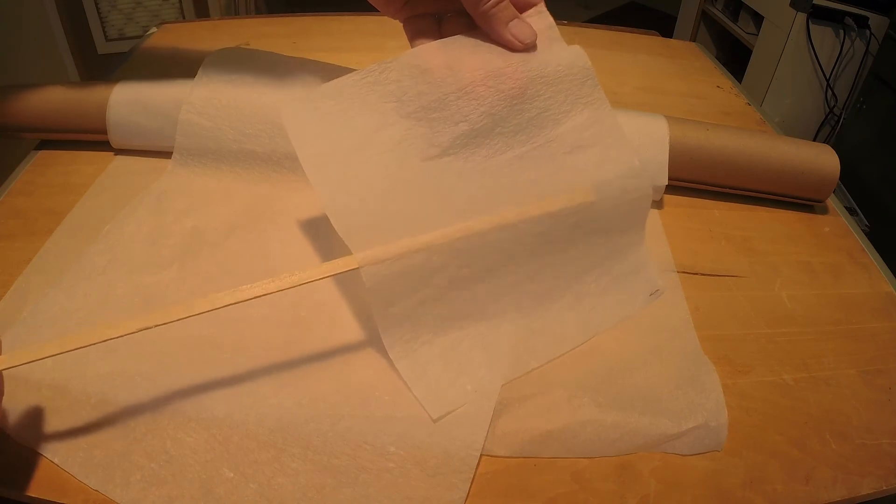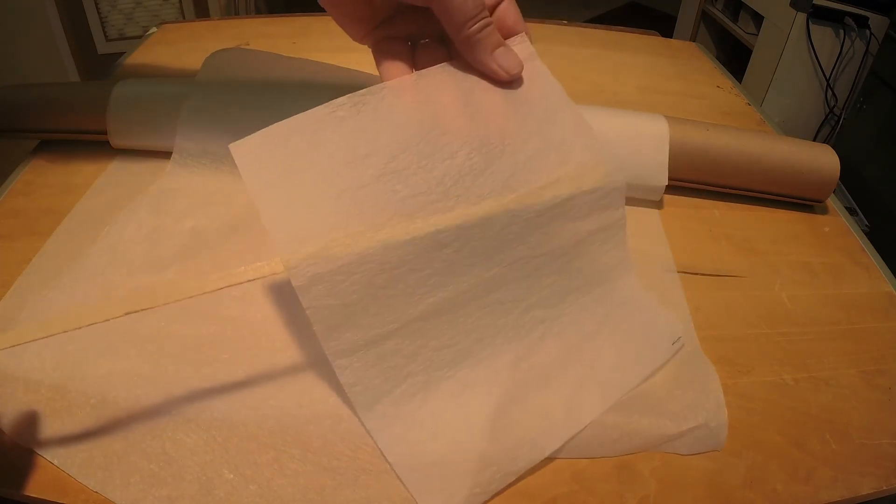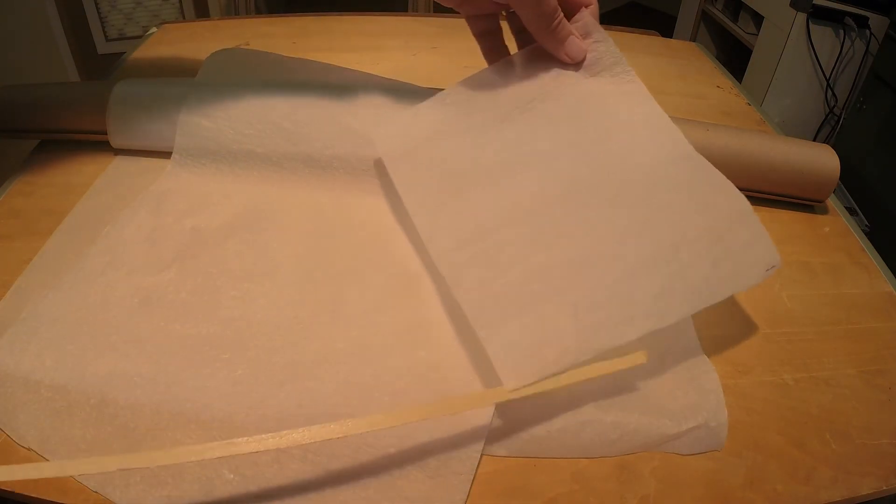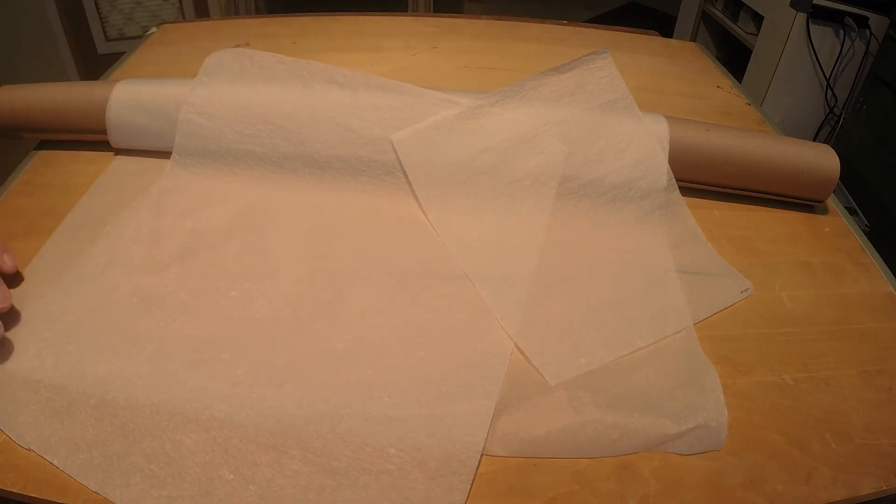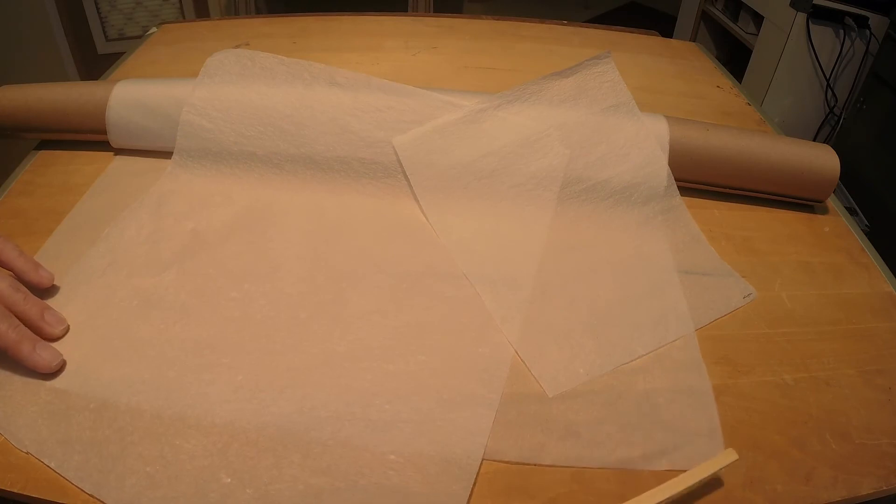There are two basic types of covering, paper and film. This video will show how to prepare, apply, and trim paper used to cover indoor models with open framework, such as Wright Stuff and helicopters.